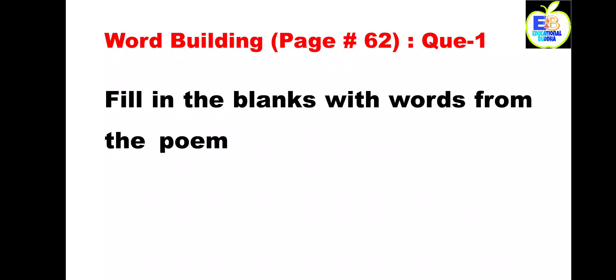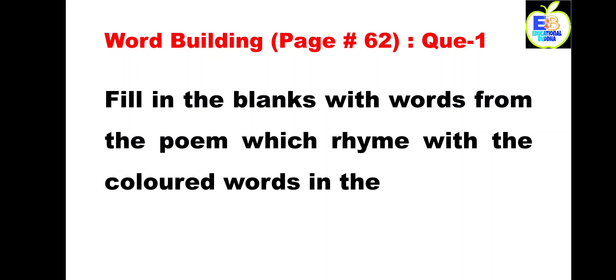And the next question given on page number 62 also, the title of the poem is 'Word Building,' question number one. We have to understand what the rhyming words are. The rhyming words are two or more words that have the same or similar ending sounds. For example: goat, boat, coat; hat, bat, cat; fun, sun, bun.